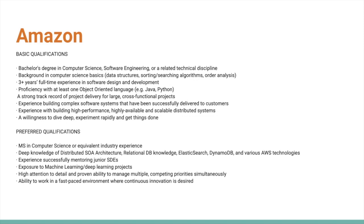Amazon is looking for a bachelor's degree in computer science, software engineering, or a related technical discipline, along with computer science basics similar to what Flipkart requires. They want full-time experience in software design and development in an object-oriented language, project delivery for large cross-functional projects, experience building complex software systems including highly available and scalable distributed systems, and the ability to deep dive rapidly and get things done. Preferred skills include deep knowledge of distributed SOA architecture.